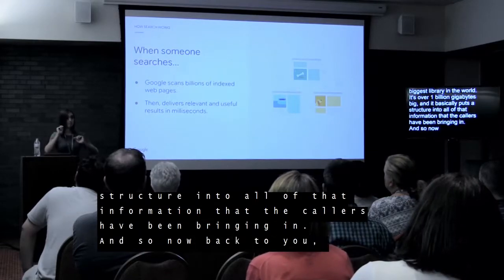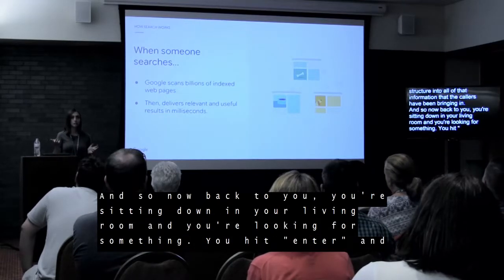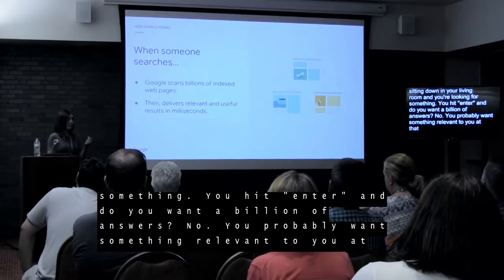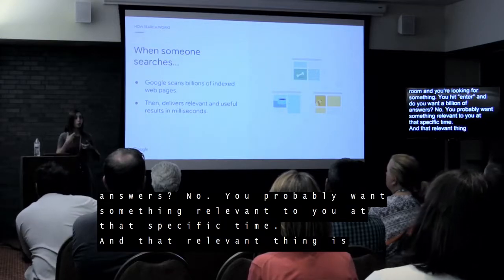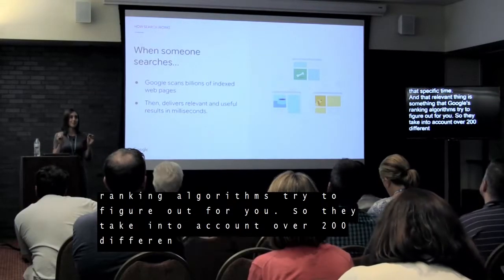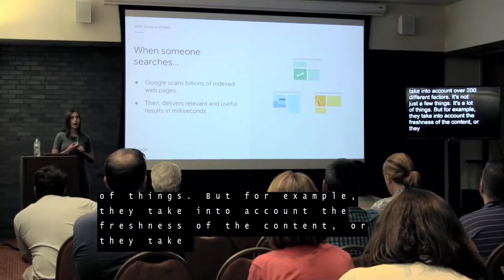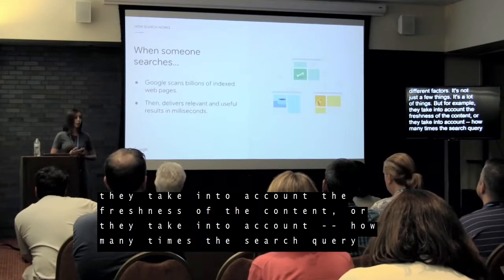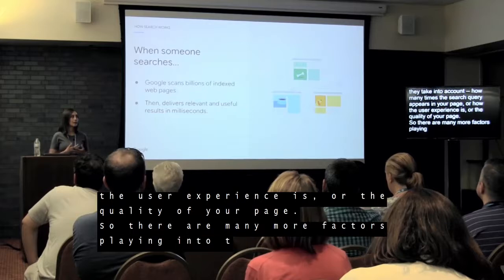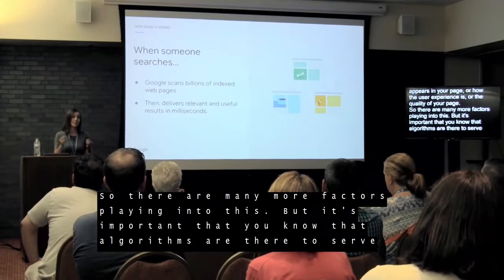Now back to you — you're sitting in your living room, looking for something, and you hit enter. You don't want a billion answers; you want something relevant to you at that specific time. That's what Google's ranking algorithms try to figure out. They take into account over 200 different factors — for example, the freshness of the content, how many times the search query appears on your page, and the quality of the user experience. The algorithms are there to serve you the best possible information at a given time.